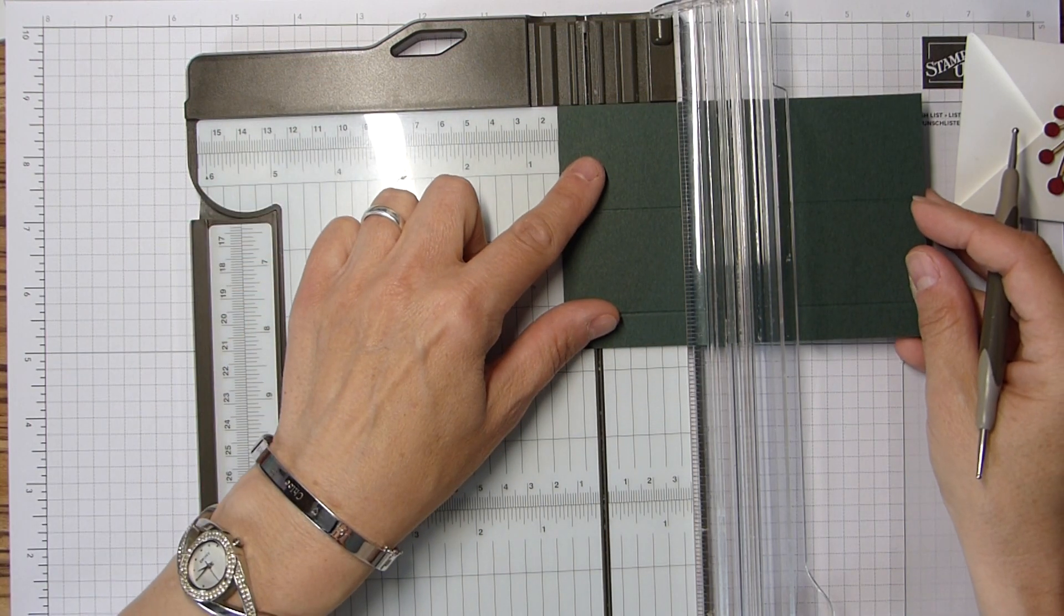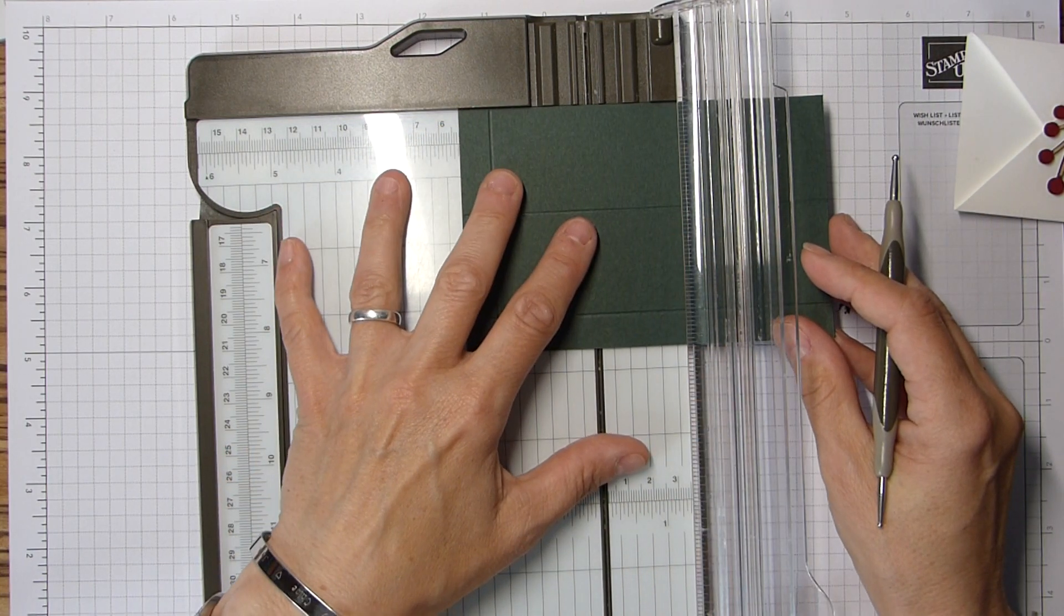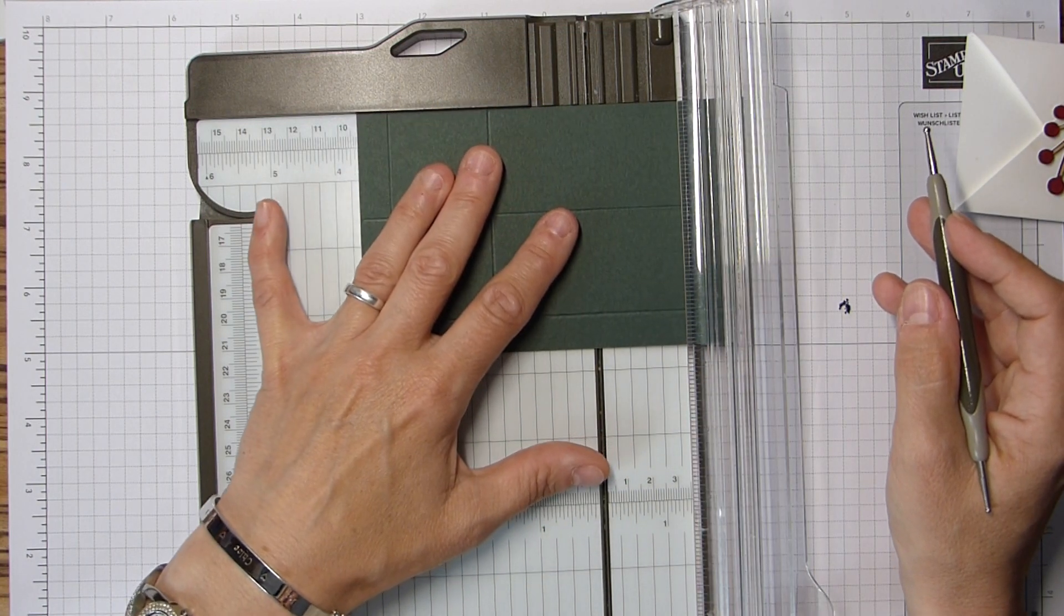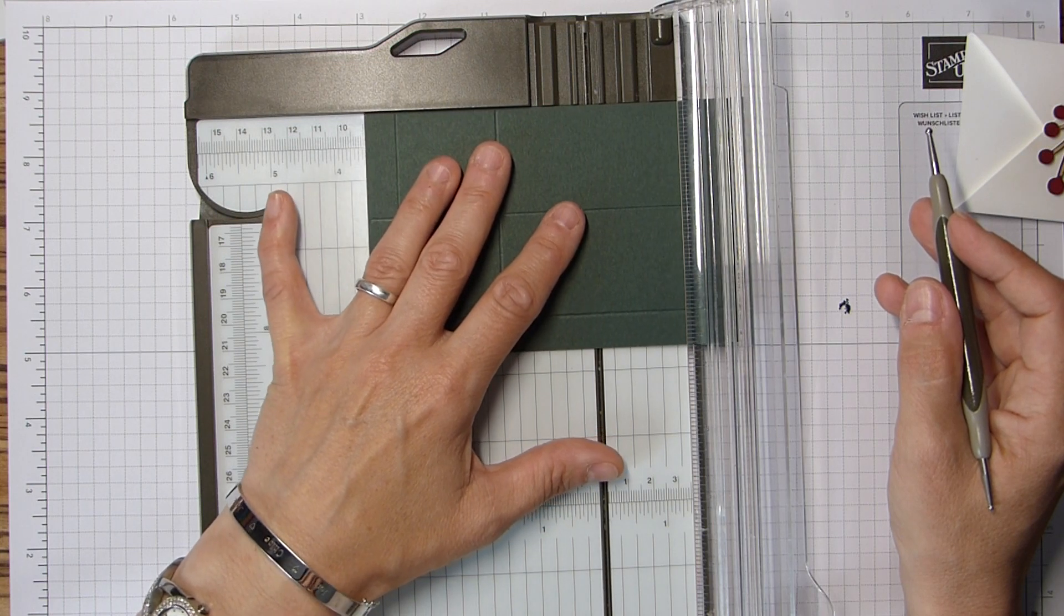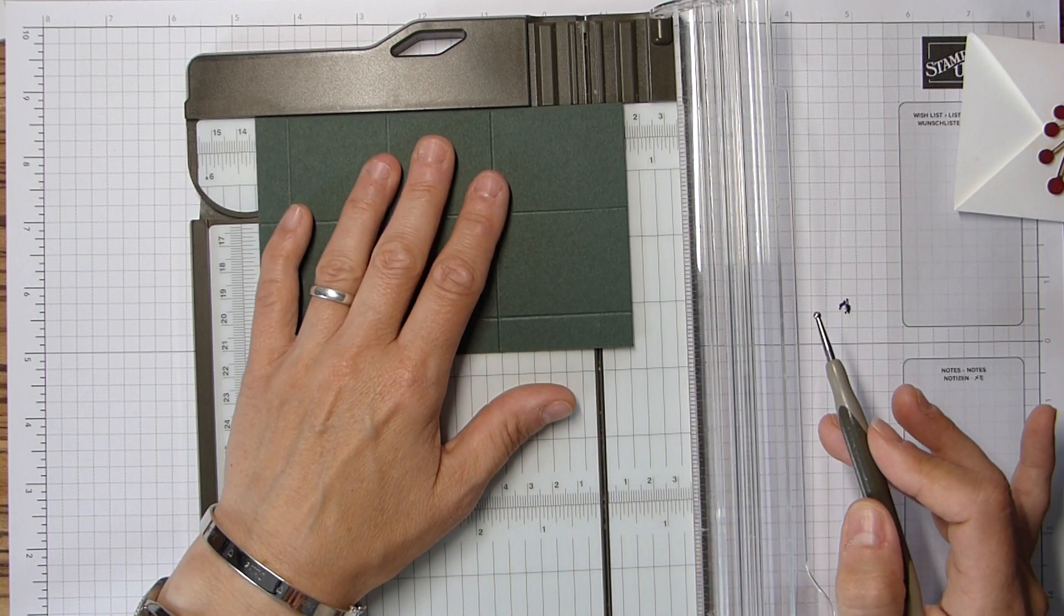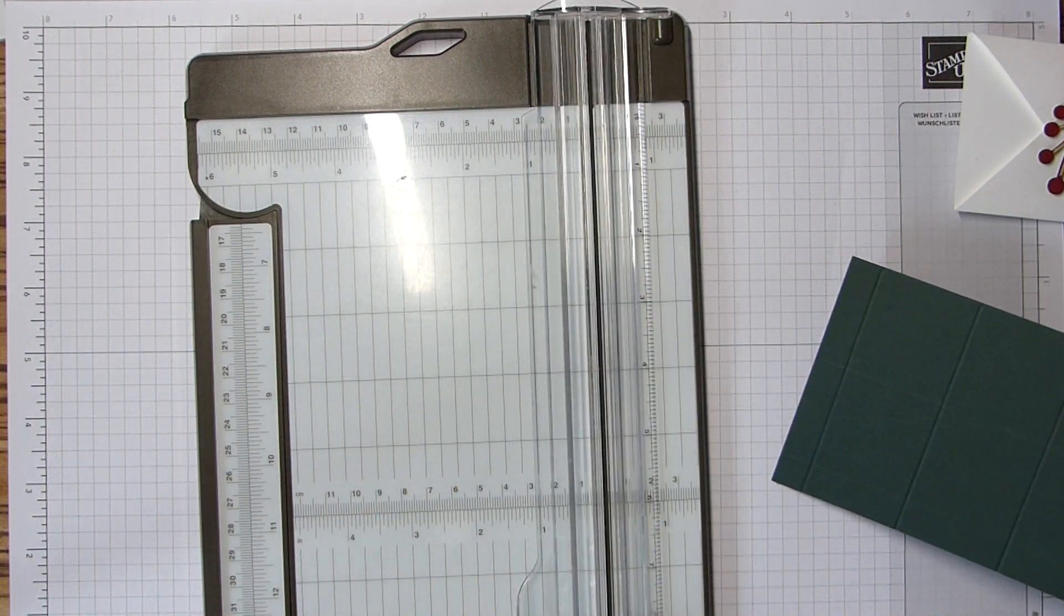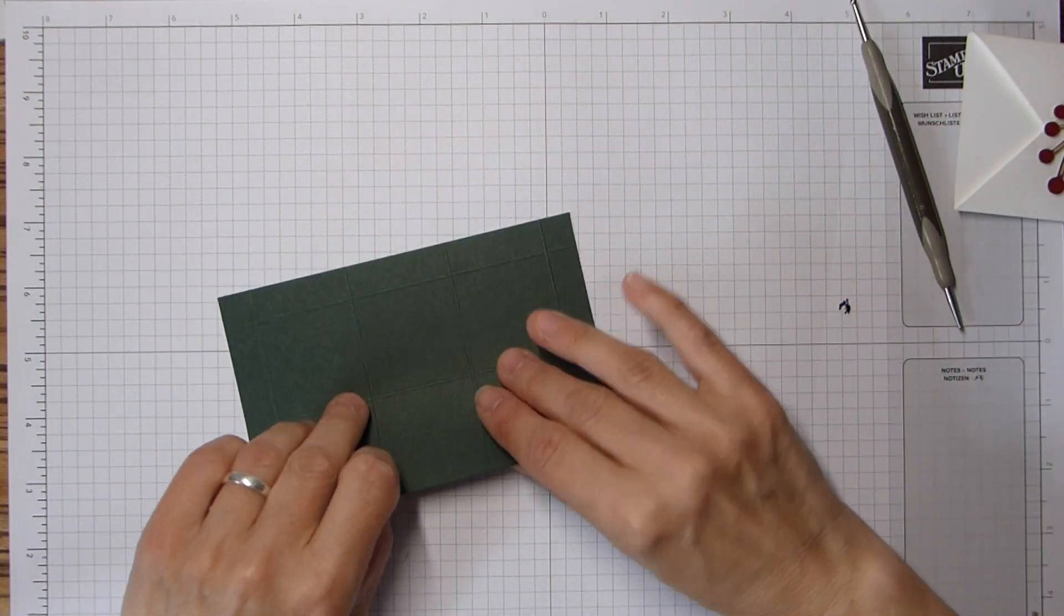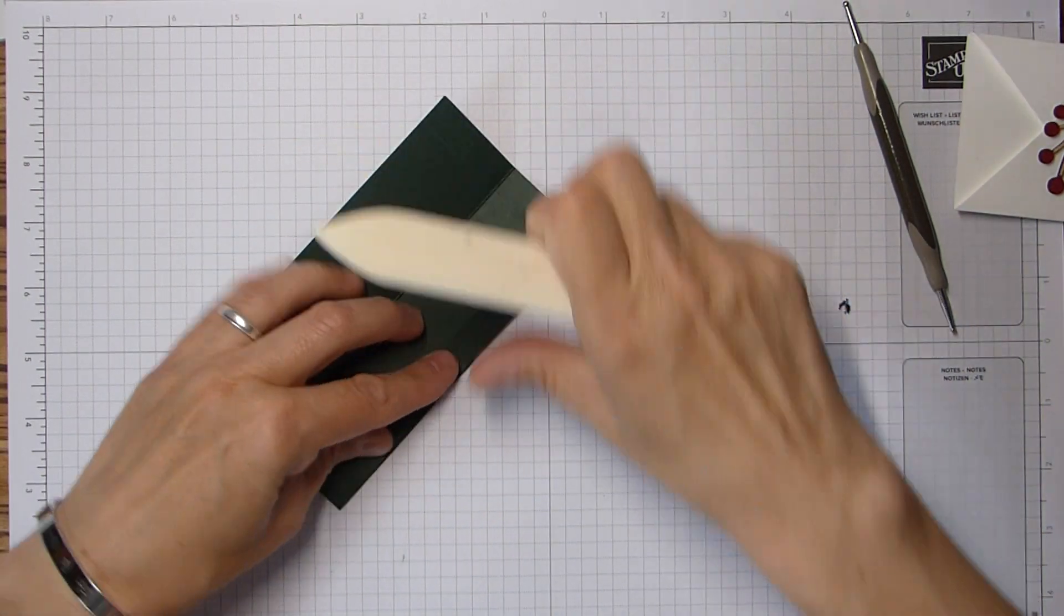So you need to score at half an inch and 2 and 1 sixteenth of an inch. And that's 1 and a half and 5.6 centimeters. Rotate anticlockwise. And then you're going to score again at half an inch, 2 and 1 sixteenth, 3 and 11 sixteenths, and 5 and a quarter. And in centimeters, that will be 1 and a half, 5.6, 9.7 and 13.8.